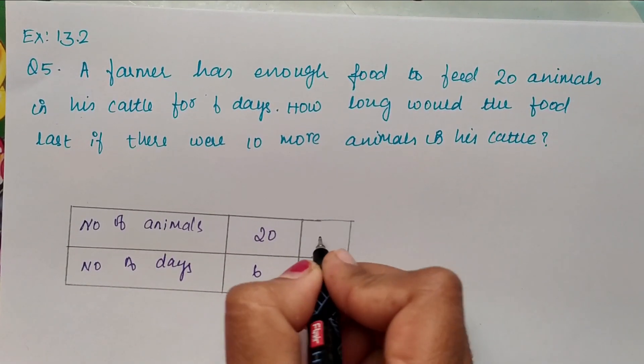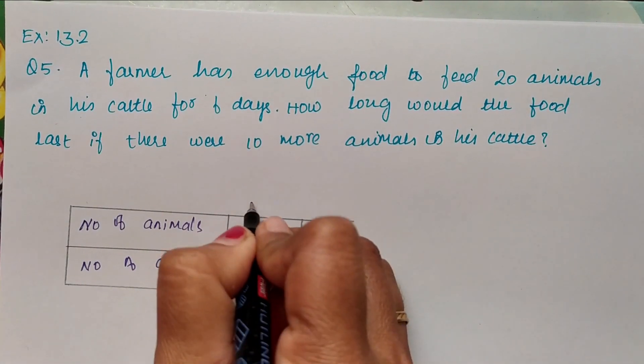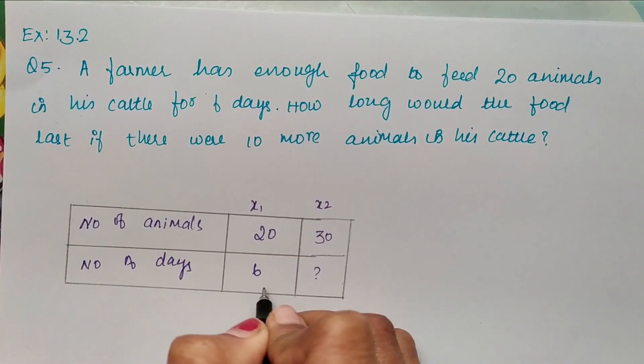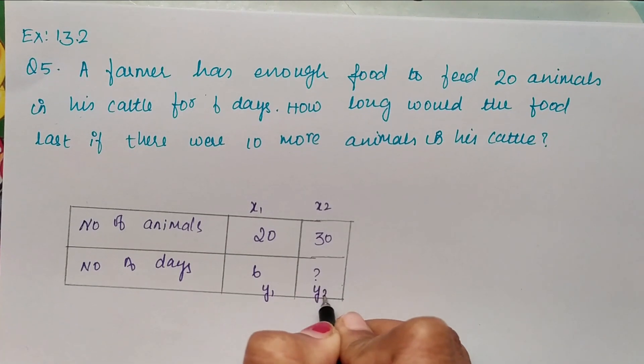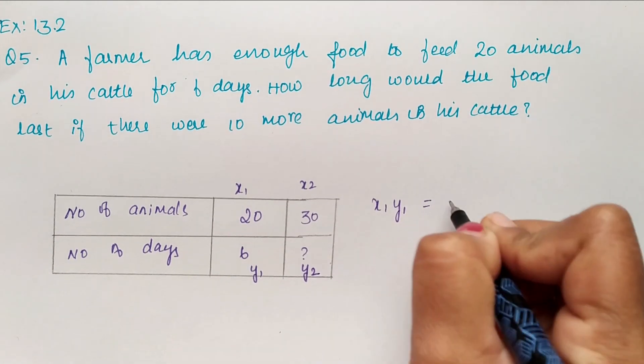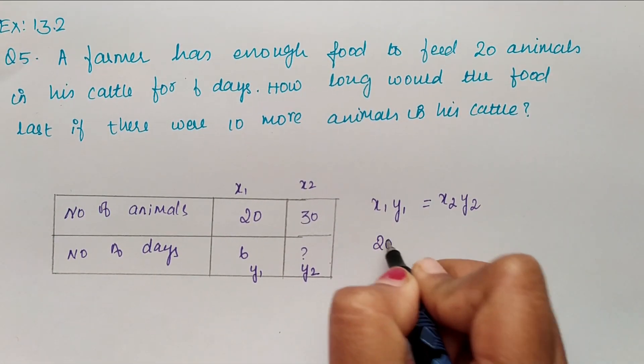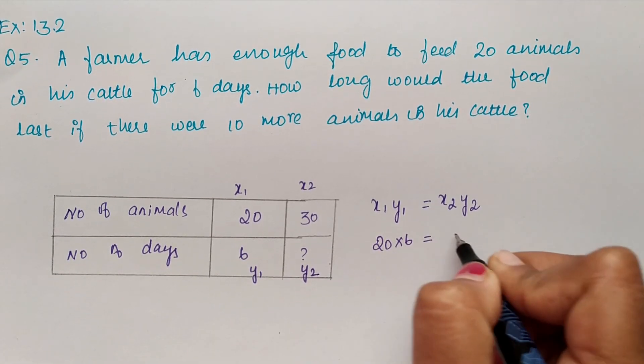So x1 and x2, y1 and y2. We can write x1 y1 equals x2 y2. x1 is 20 into 6, y1 is 6.